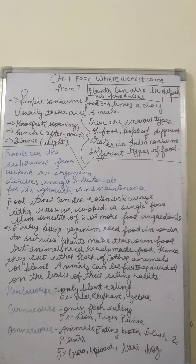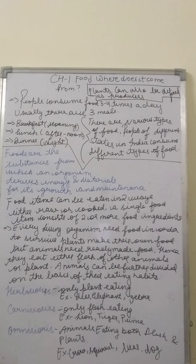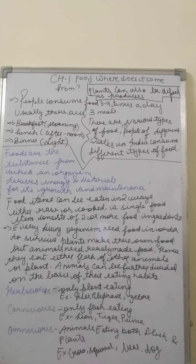Animals eat either the flesh of other animals or plants. Animals can be further divided on the basis of their eating habits. Plant-eating animals are known as herbivores — for example, deer, elephant, and zebra. Flesh-eating animals are known as carnivores — for example, lion, tiger, puma, cheetah, and leopard. Animals that eat both plants and flesh are omnivores — for example, crow, squirrel, bear, and dog. We will continue in our next video.